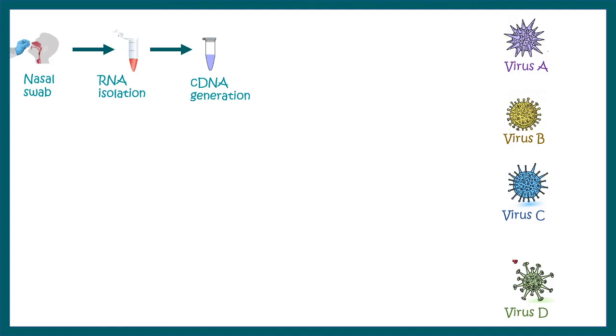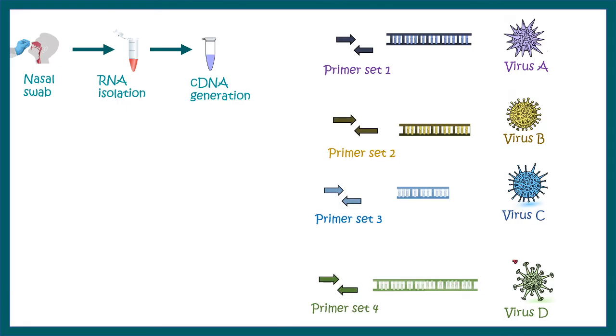If viruses A, B, C, or D are present, then there would be respective genes unique to them present in this cDNA sample. From this sample, using unique primer sets, all of these amplicons can be amplified.